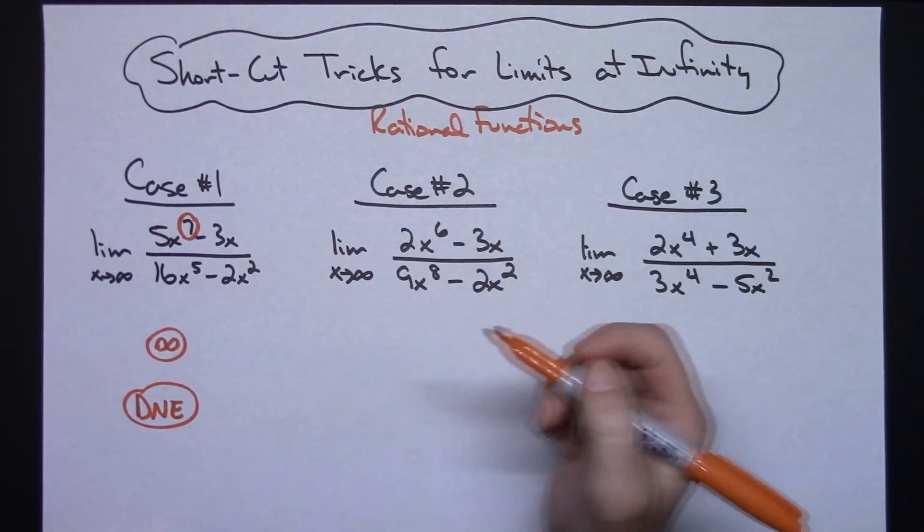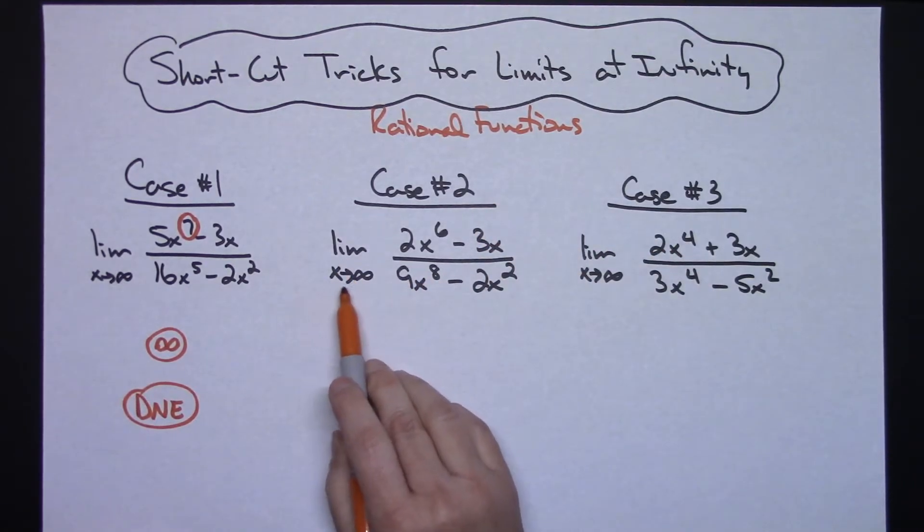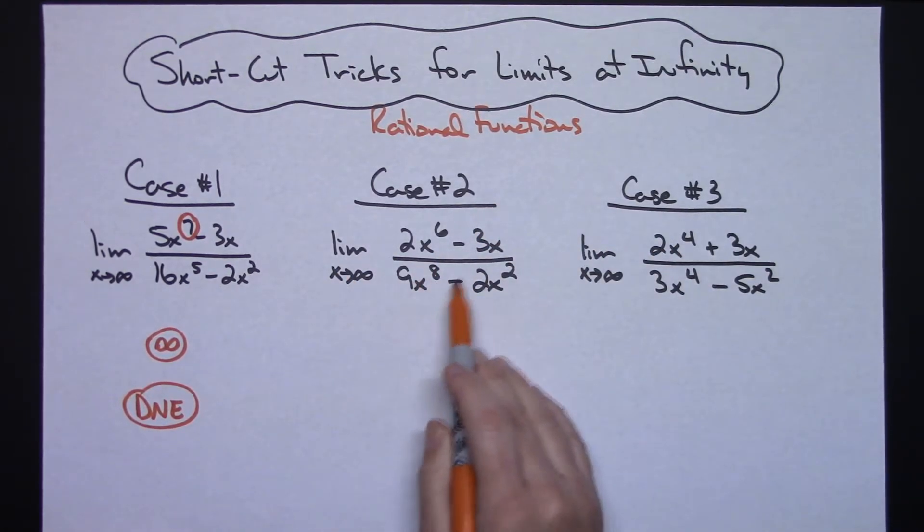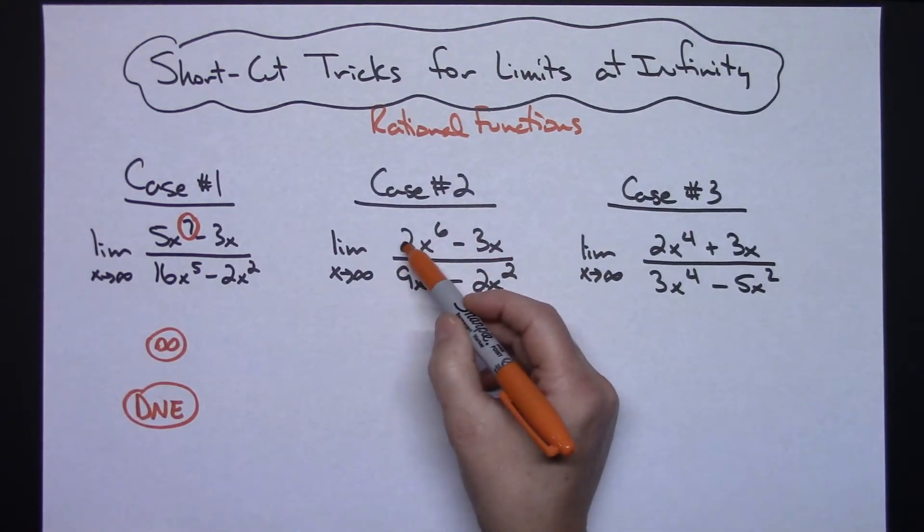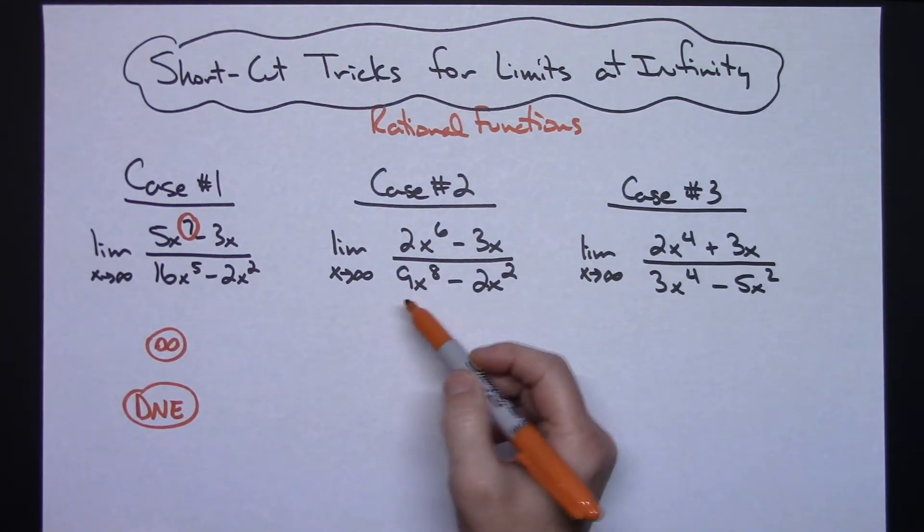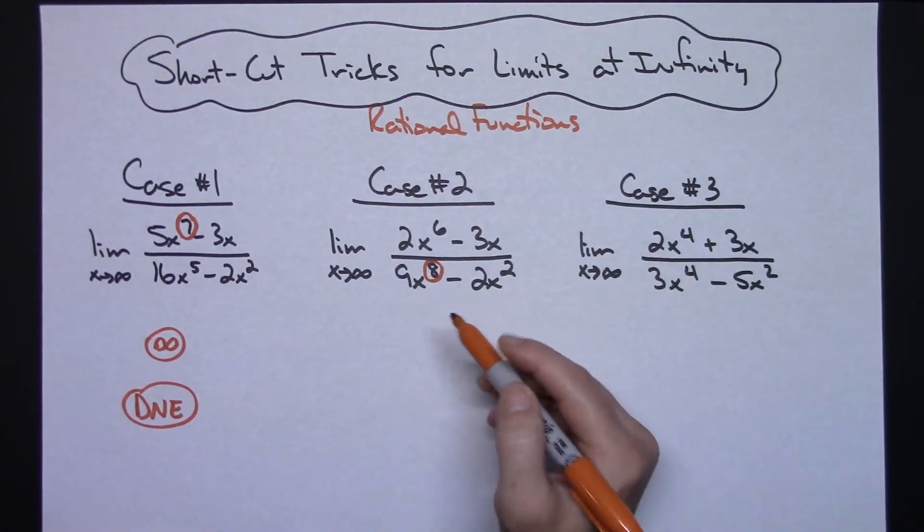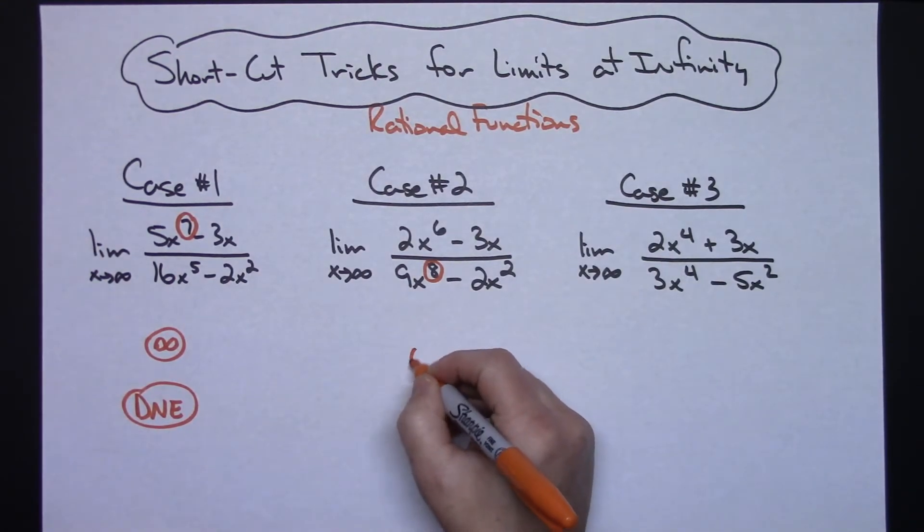So either one of those would be an acceptable answer. In this second case here, again I've got the limit as X approaches infinity and I have a rational function. You're going to take a look at those degrees: the numerator is 6 and the denominator is 8. Whenever the denominator's degree is higher, then I know that my limit is going to approach zero.